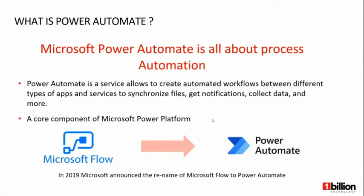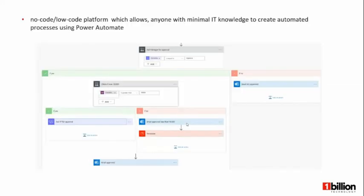It was previously known as Microsoft Flow, and in 2019, Microsoft changed its name to Microsoft Power Automate by introducing several capabilities like robotic process automation. As per Microsoft, they introduced it as a no-code or low-code platform that allows developers and non-developers to create automated processes with minimal IT knowledge.